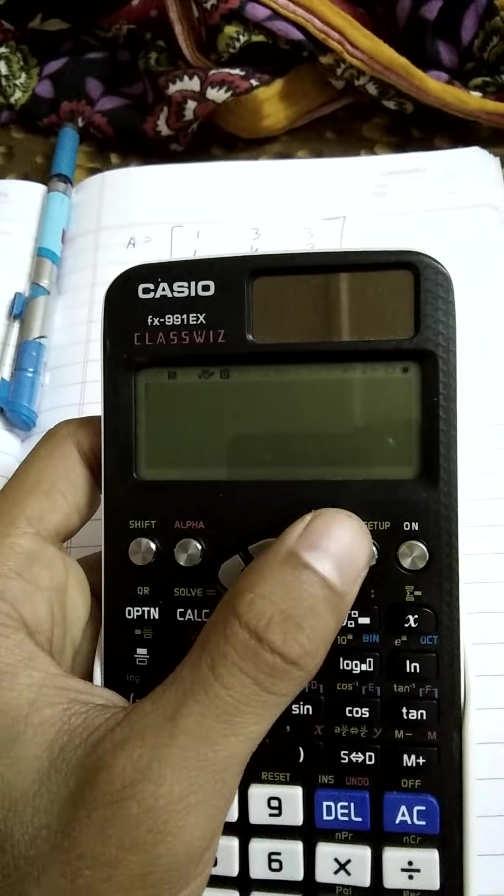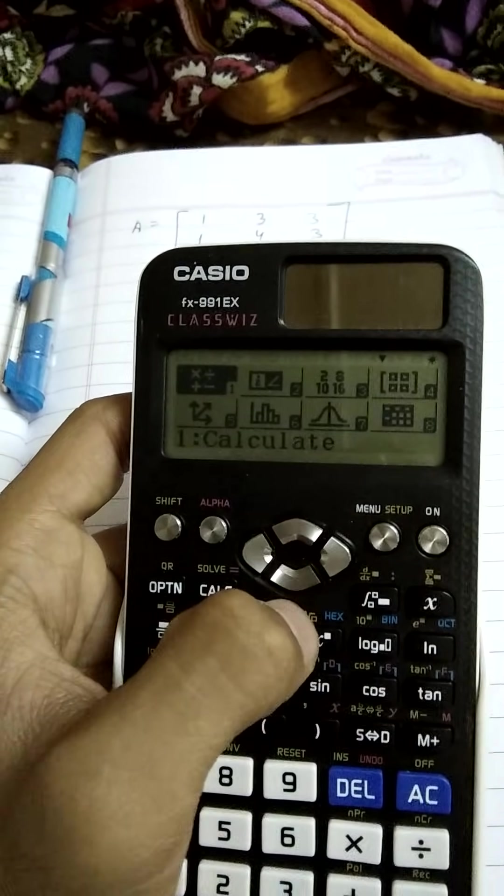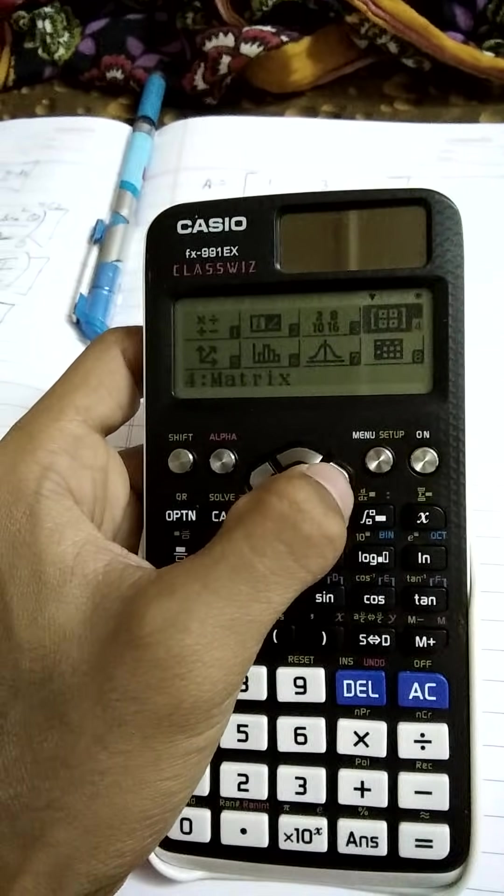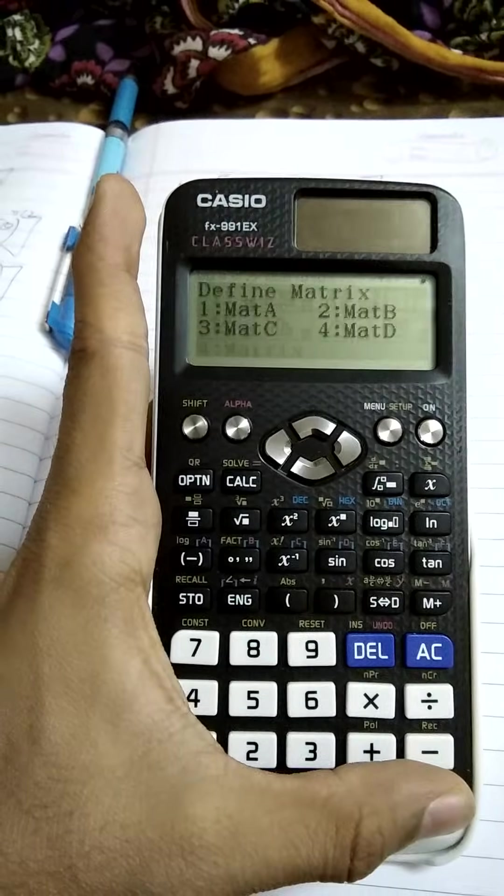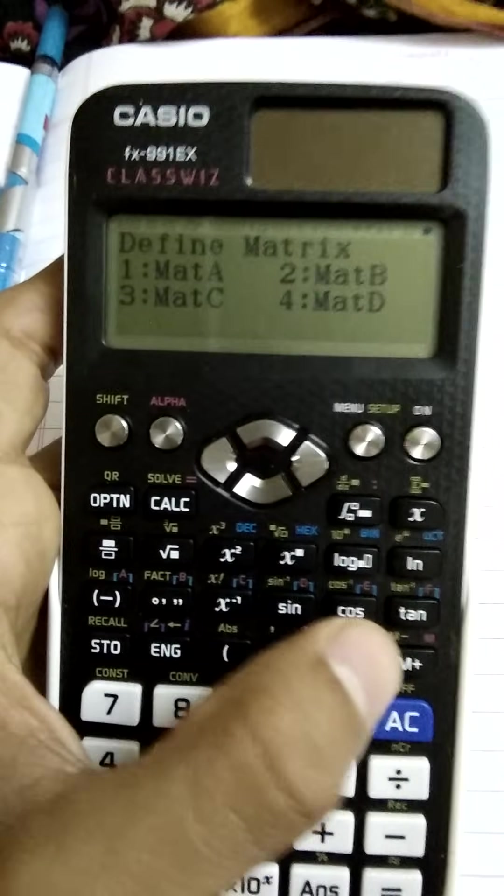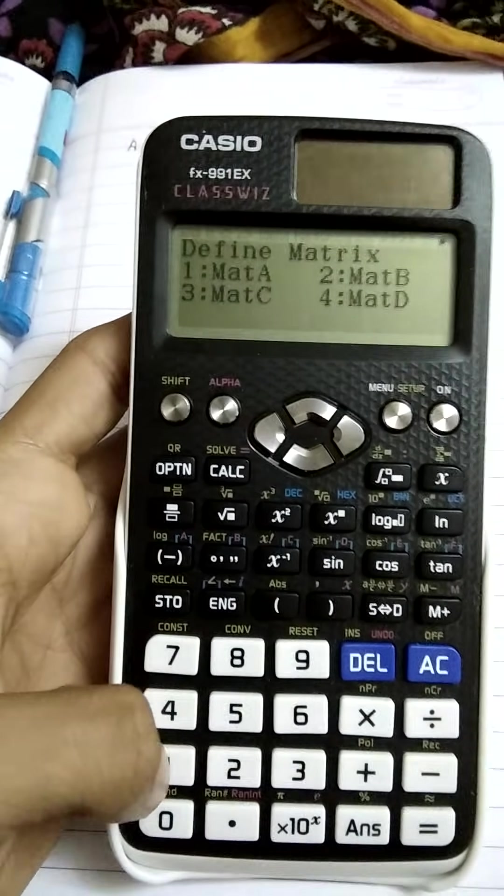We push the setup button or the menu button out here and we go to option 4 and press the equals button. Then it is asking which matrix you want. Since it is our first matrix we are going to enter, let's press 1 for matrix A.